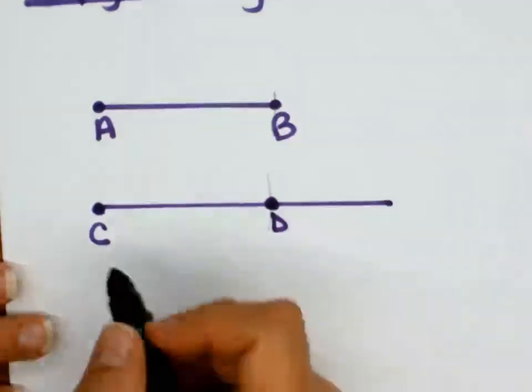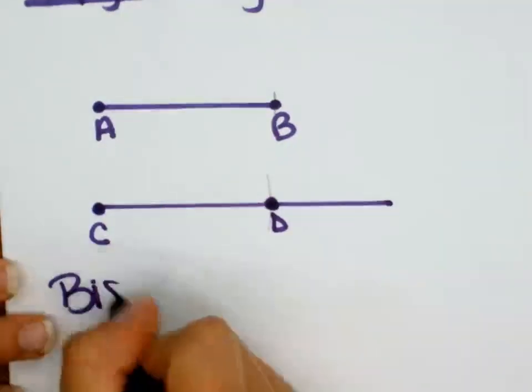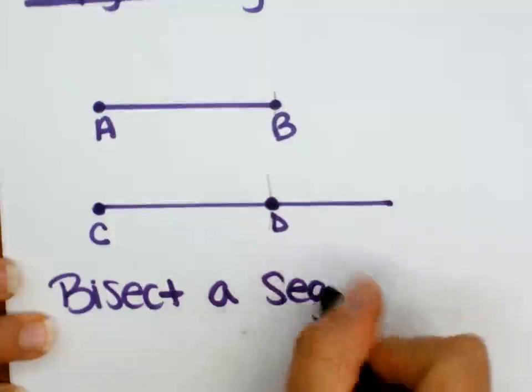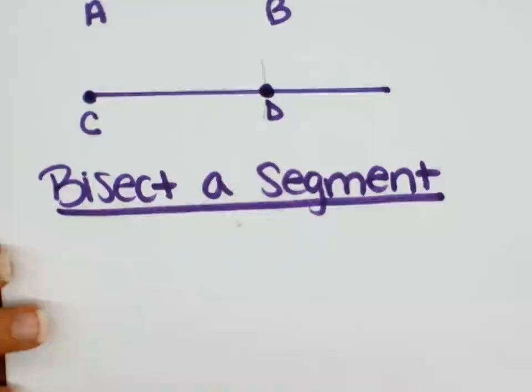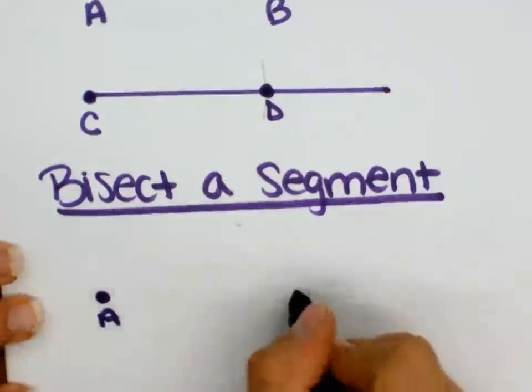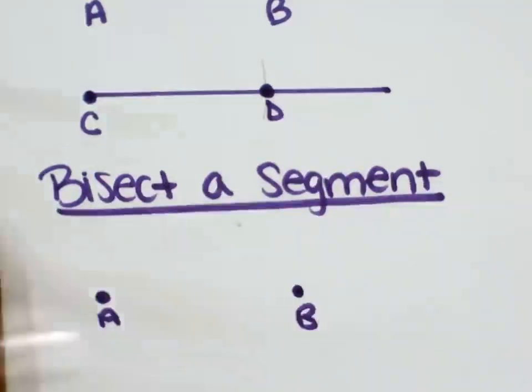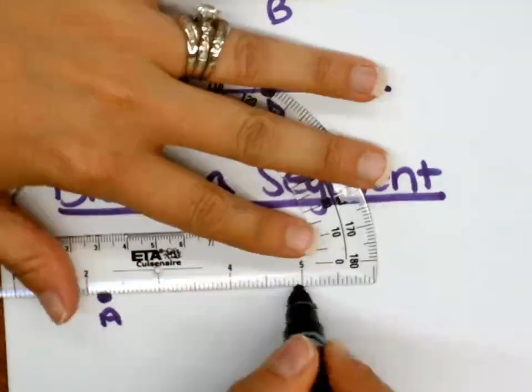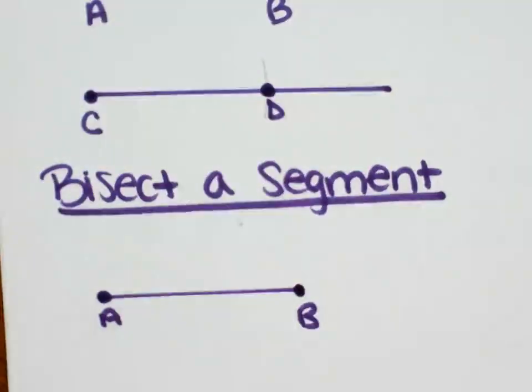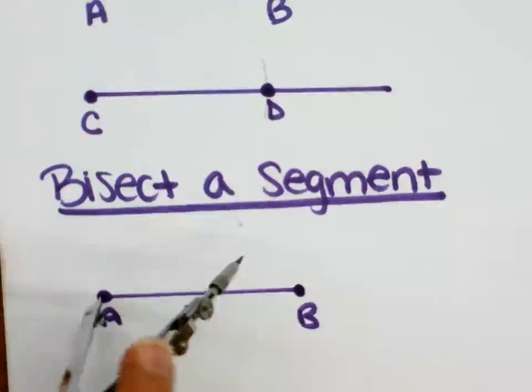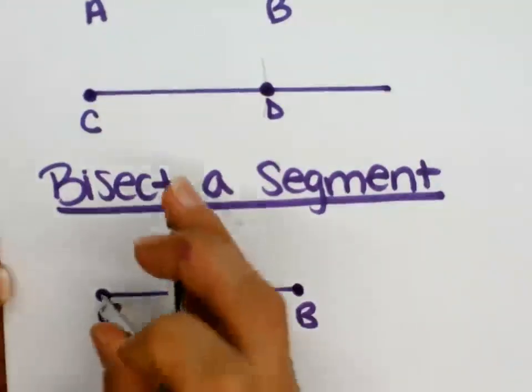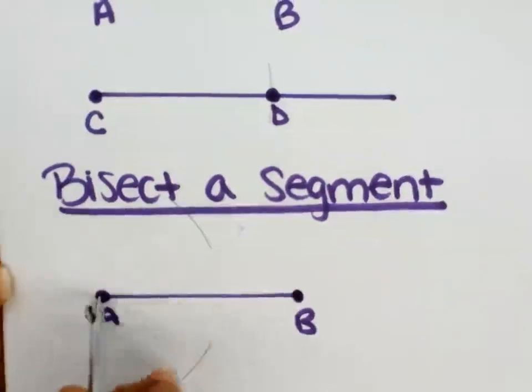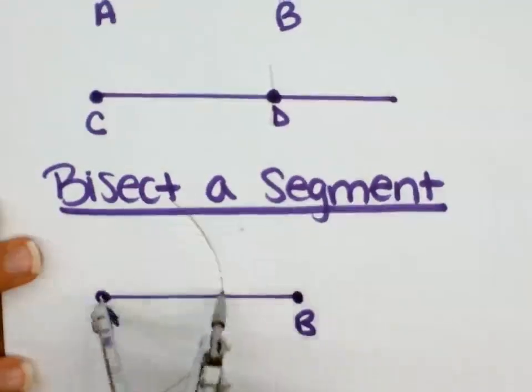All right, so let's try to bisect a segment. So we need to start with a segment. And in order to bisect the segment, I'm going to put the sharp part on the A. I'm going to open it up a little bit more than halfway. I'm going to do an arc above, arc below. You can either do arc above, arc below, or you can connect them. It's just personal preference.